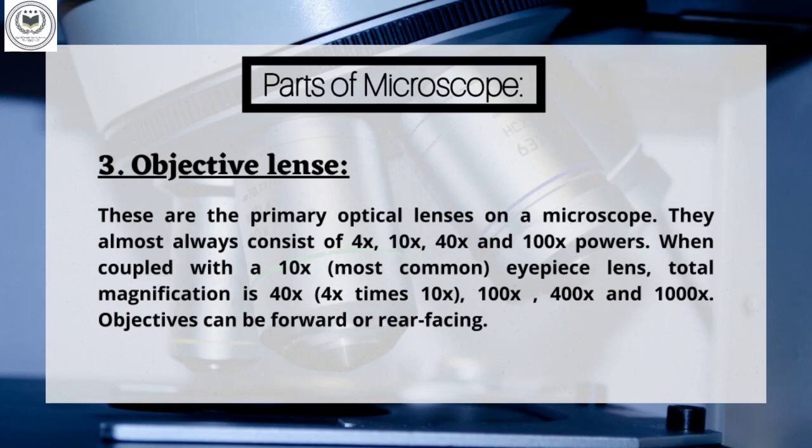Part 3: Objective Lens. These are the primary optical lenses on a microscope. They almost always consist of 4x, 10x, 40x, and 100x powers. When coupled with a 10x eyepiece lens, total magnification is 40x, 100x, 400x, and 1000x, and typically include 3, 4, or 5 lenses on most microscopes.